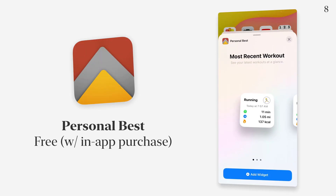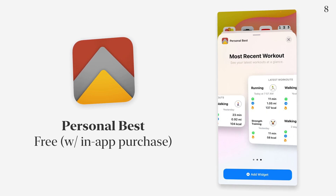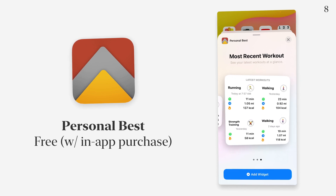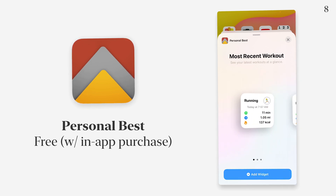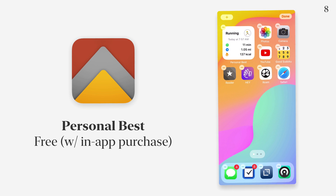Personal Best is a good app for tracking your personal best at certain exercises. I can see things like my most recent workout — there are actually quite a few to look at. If I want just a summary of my last workout, I throw that on the home screen and I can see the time, the distance, and the calories that I burned. That's pretty nice.